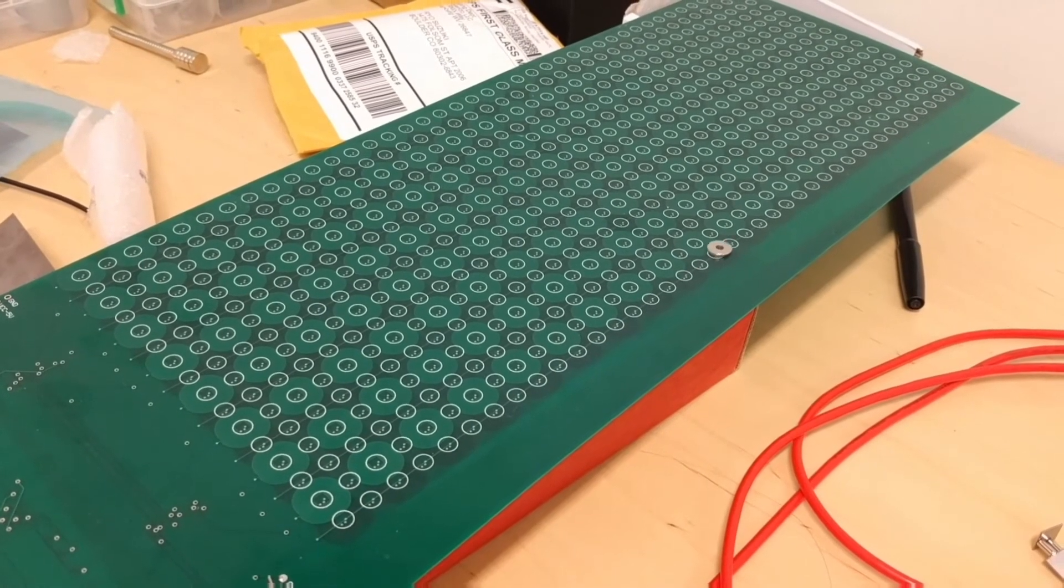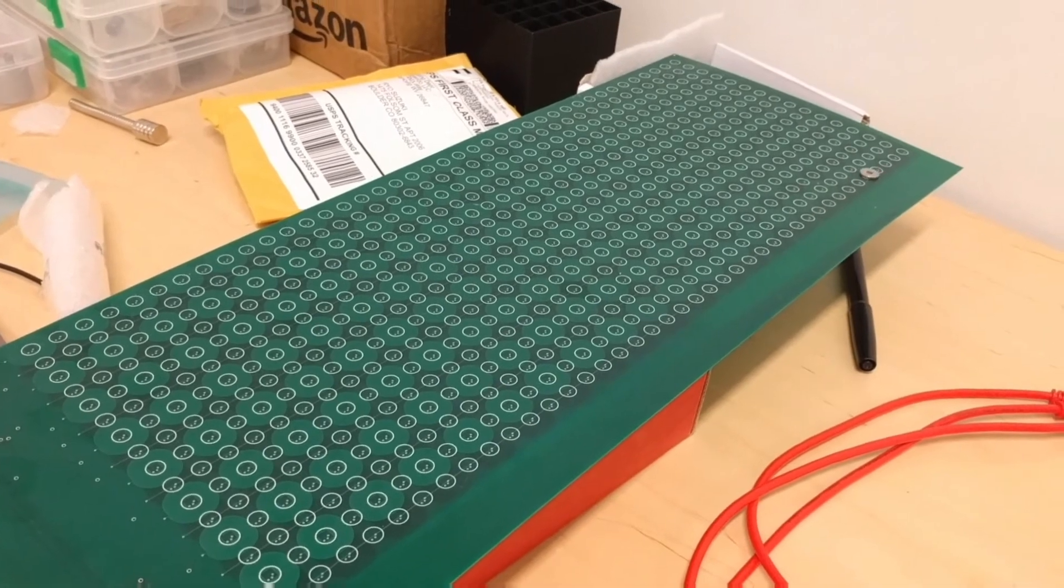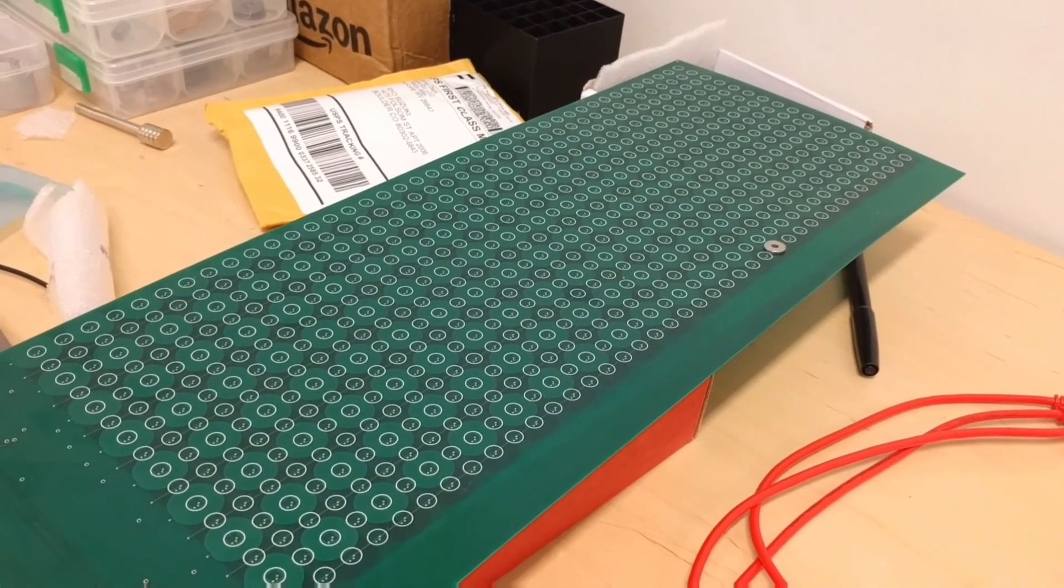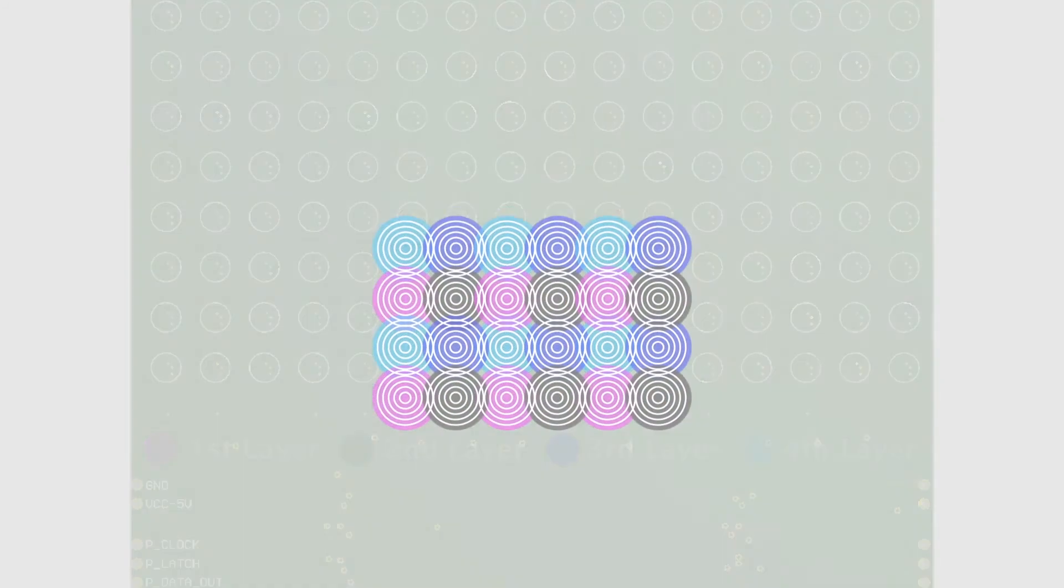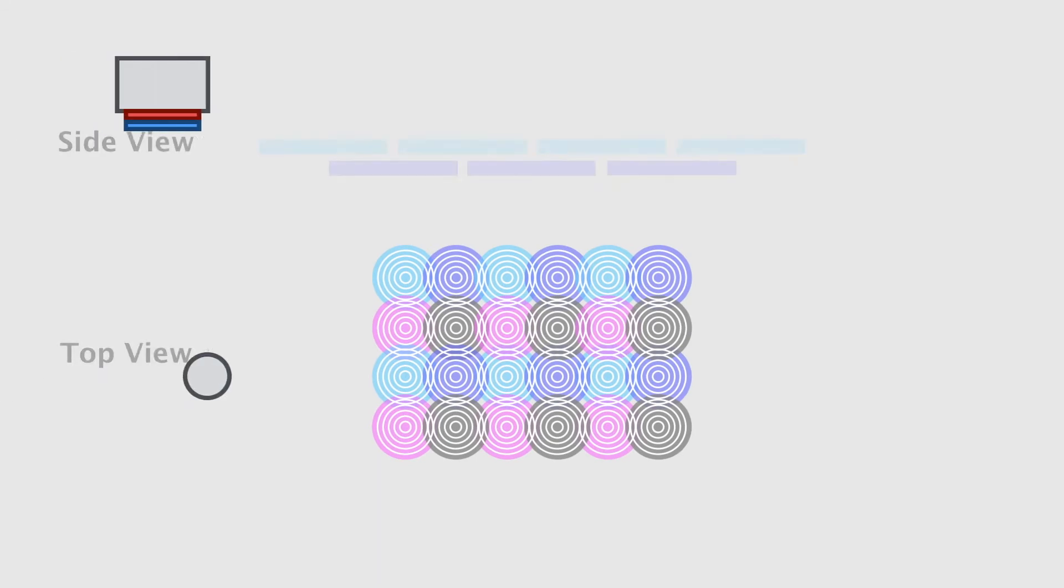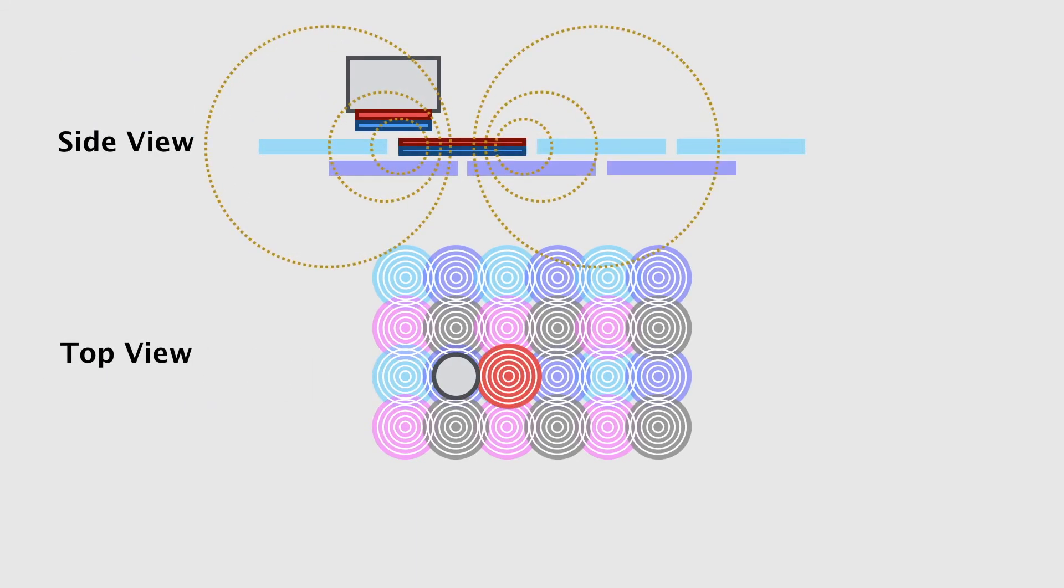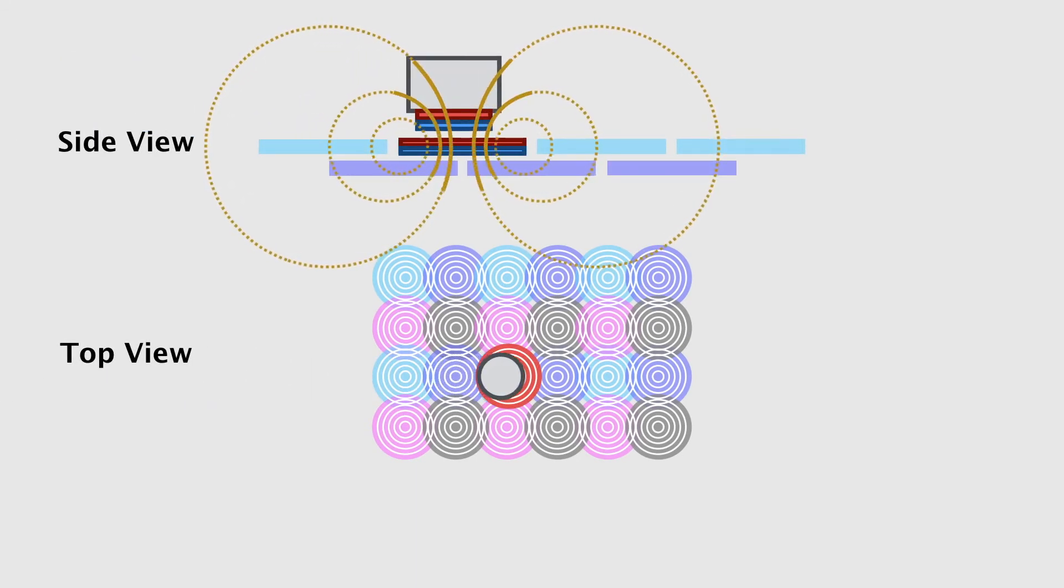For actuation, the system uses electromagnetic coil arrays to actuate a swarm of small magnets. The electromagnetic coil arrays are fabricated with four-layered printed circuit boards, and each coil can attract a single magnet by generating a local magnetic field.